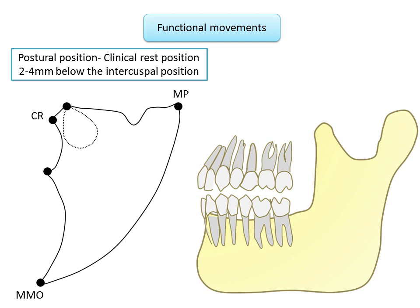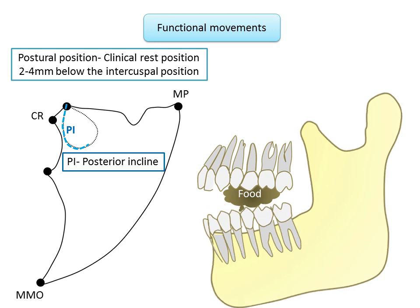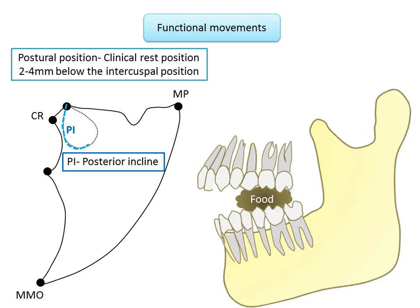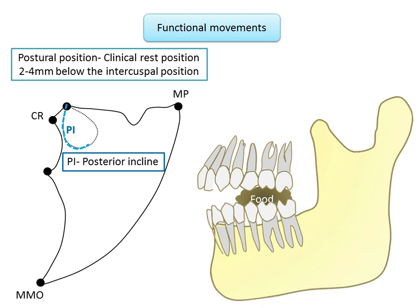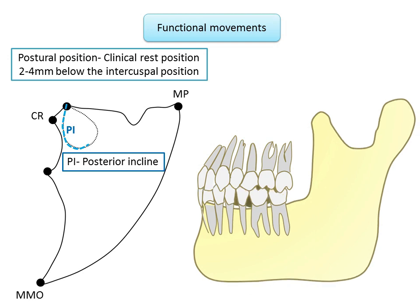When the mandible moves along the posterior incline of the teardrop, food is sliced by the cuspal inclines. The apex of the tracing is formed when opposing teeth are in cusp-to-fossa relationship, that is in centric occlusion, and trituration of food occurs. As the mandible moves to form the anterior incline of the teardrop, dispersion of churned food along the sliceways occurs.